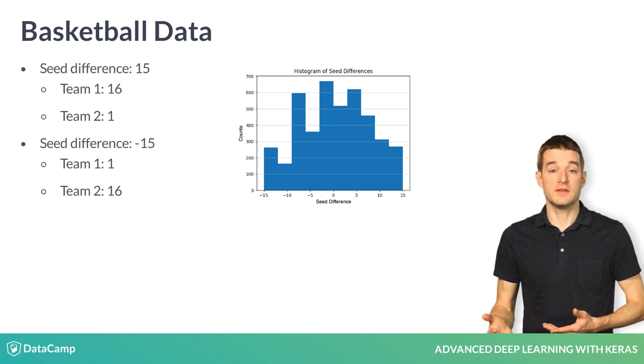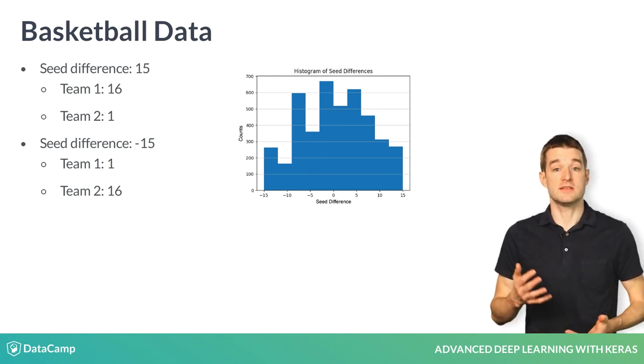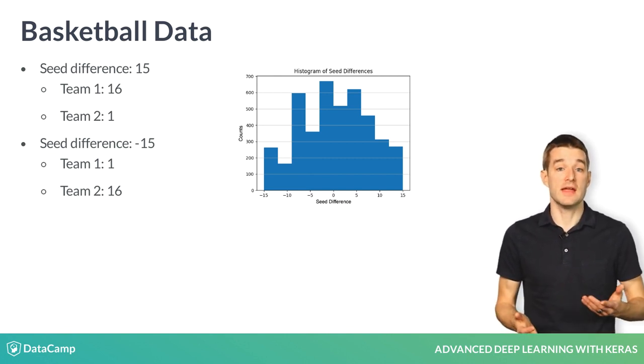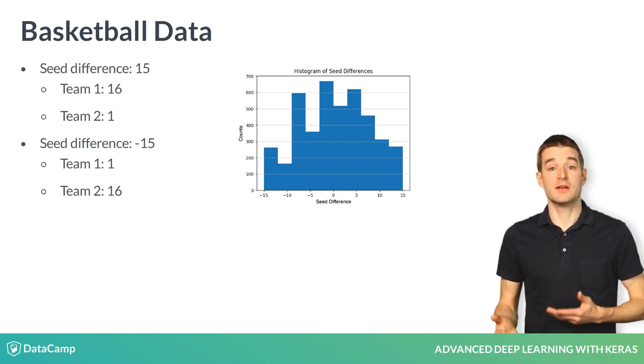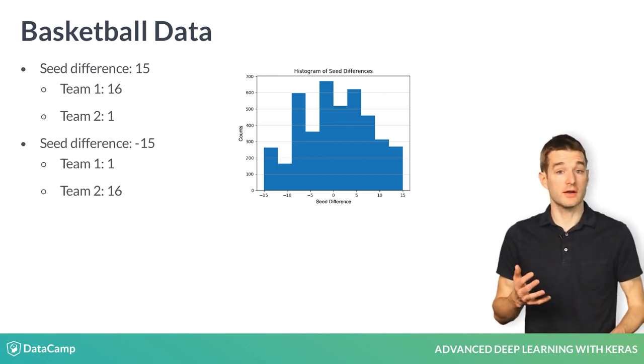A seed difference of positive 15 means that team 1 has a seed of 16 and is playing a team of seed of 1. This means team 1 is likely, though not certain, to lose.